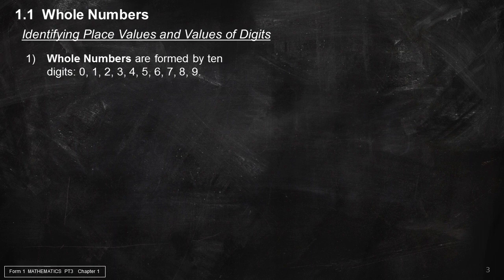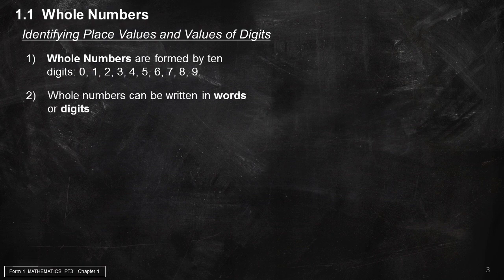Whole numbers are formed by 10 digits: 0, 1, 2, 3, 4, 5, 6, 7, 8, and 9. Whole numbers can be written as words or digits.